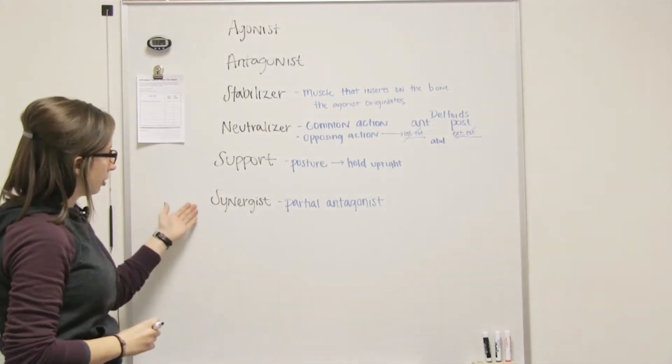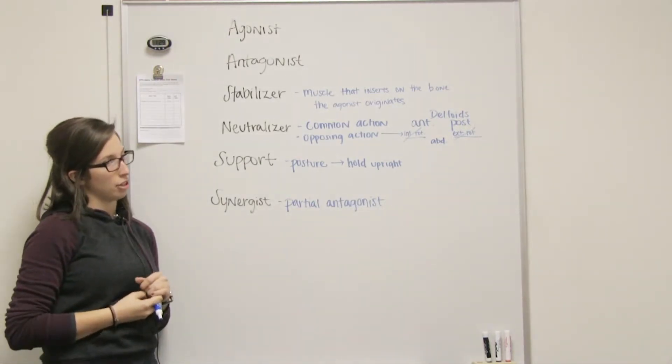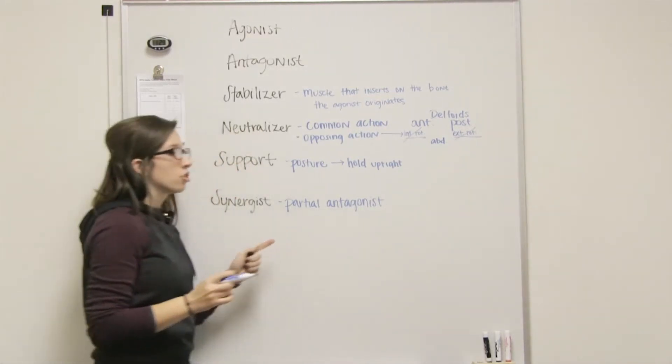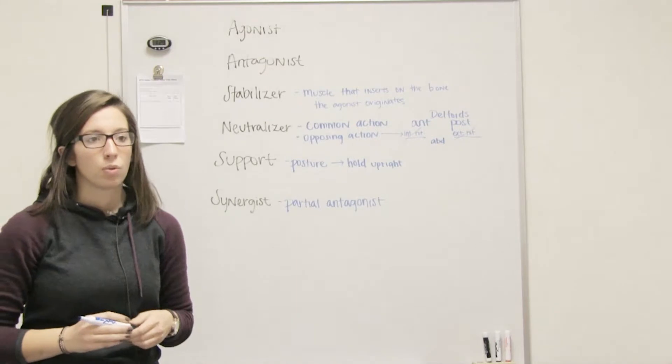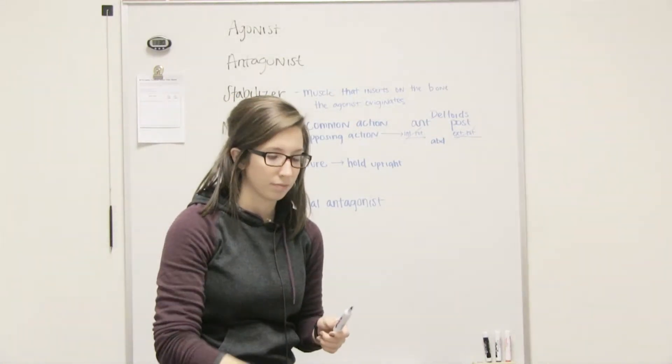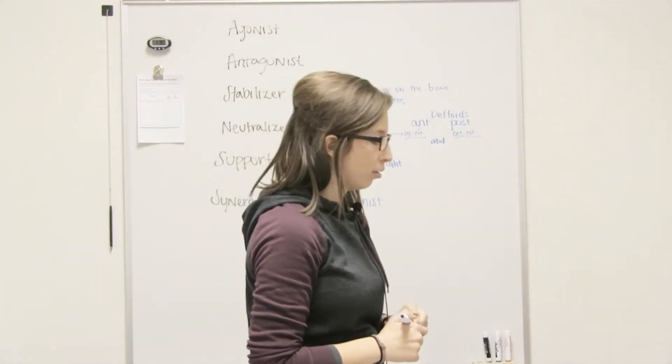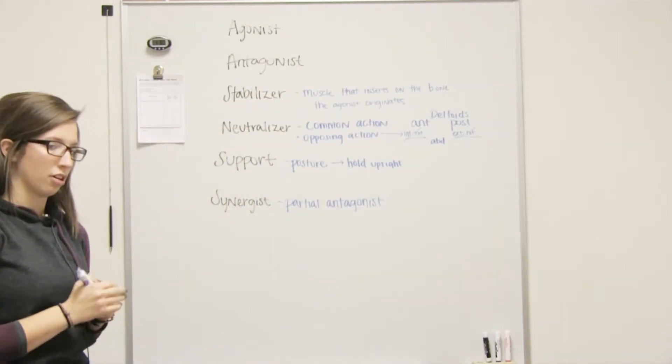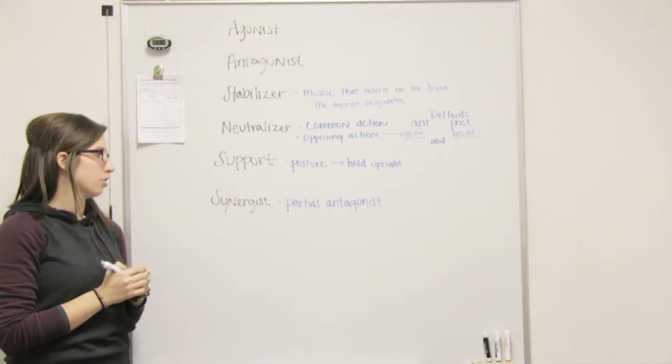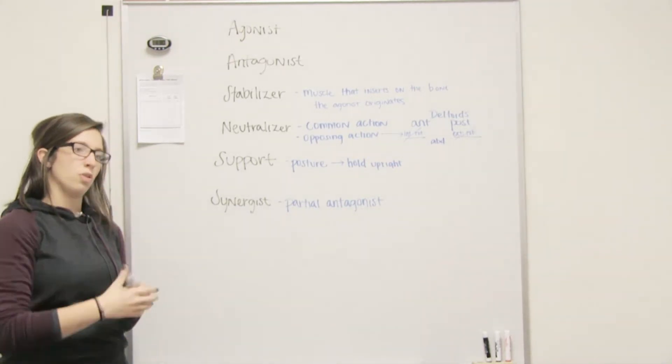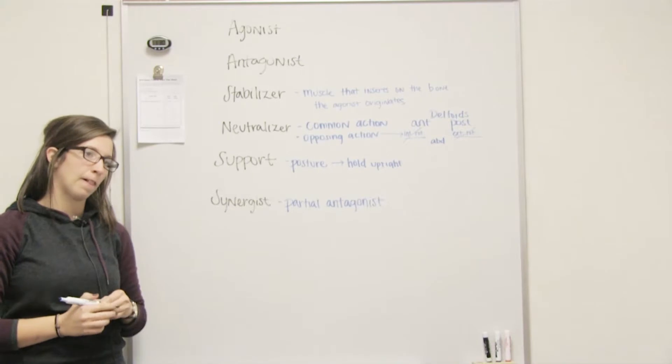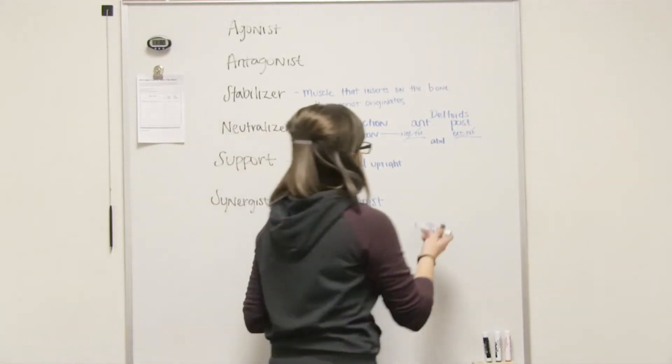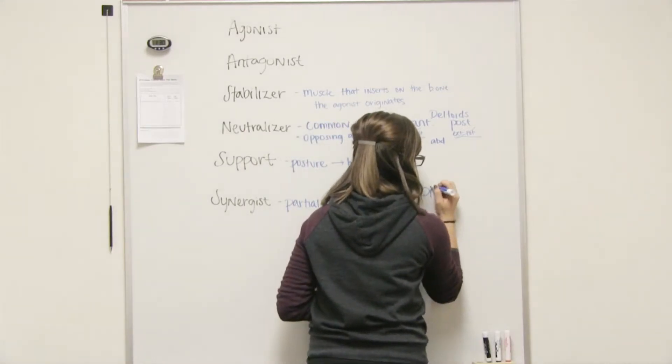Now when it comes to a synergist, a synergist does not have a common action. It only has a partial antagonistic action. So, for example, when it comes to elbow flexion, what is your main elbow flexor? So with your elbow flexor, what is your main elbow flexor?